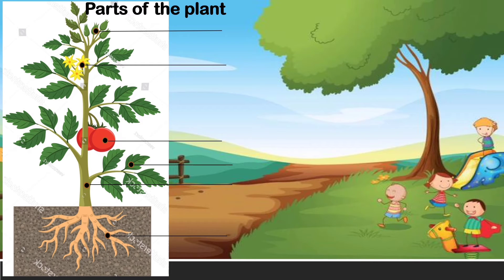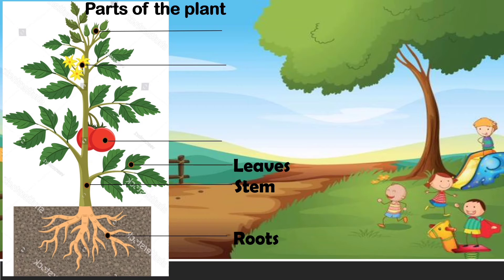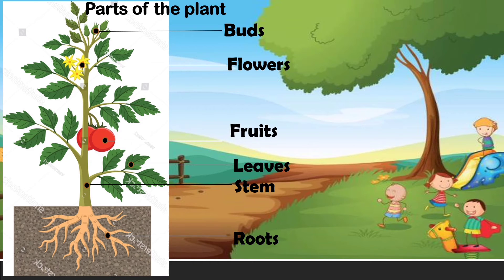Let us see the parts of the plants. Roots, stem, leaves, buds, flowers and fruits. Roots anchor the plants in the soil. The stem helps the plant to stand upright. The leaves are the kitchen of the plant. A healthy plant produces buds, flowers and fruits.